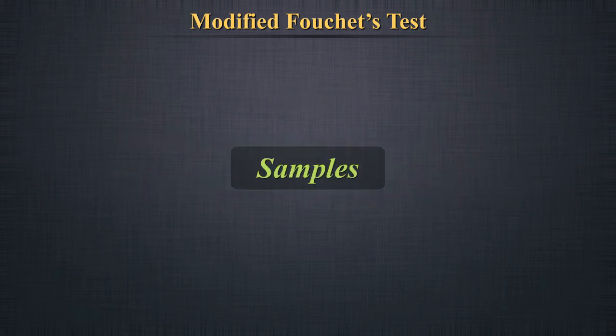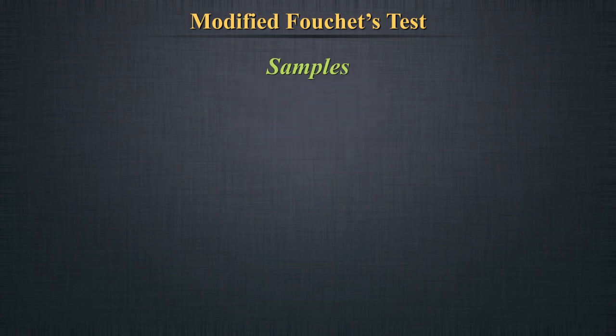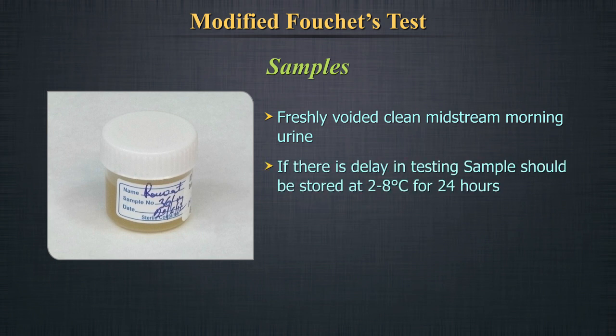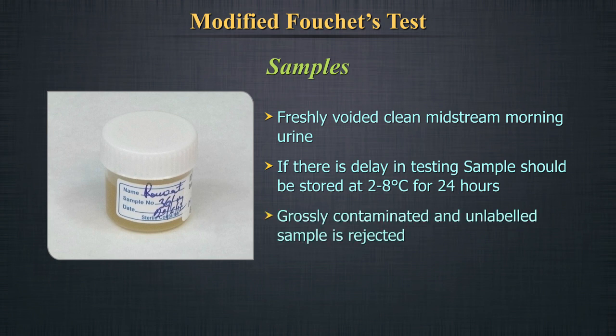Samples should be freshly voided urine, preferably a clean-catch midstream morning specimen. Samples can be stored at 2 to 8 degrees centigrade for 24 hours. Grossly contaminated or unlabeled specimens should be rejected.